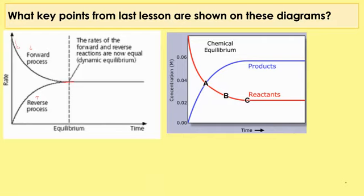And this diagram on the right shows that point C is when dynamic equilibrium is reached. At point C we can see — it's not a very good straight line — but at point C the amount of products and reactants is not changing anymore, so they are remaining the same, but you'll notice they're not equal to each other.